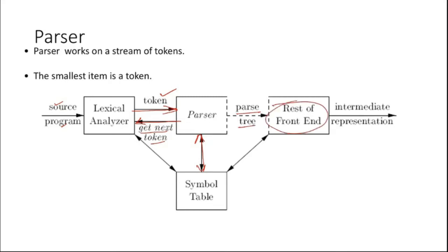The parse tree goes to semantic analysis first, and after semantic analysis comes intermediate code generation, which generates the intermediate representation or intermediate code. This is how a parser is placed within the compiler and how it communicates with both sides — its input being tokens and its output being a parse tree.